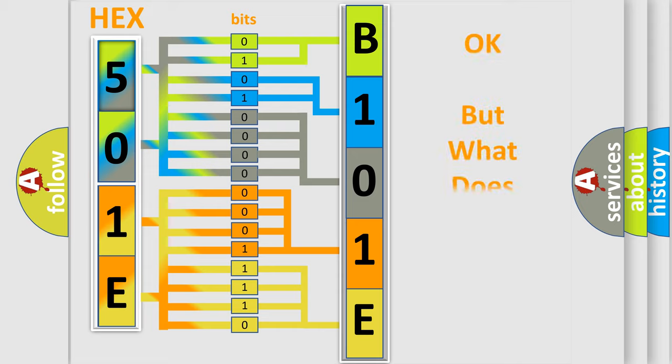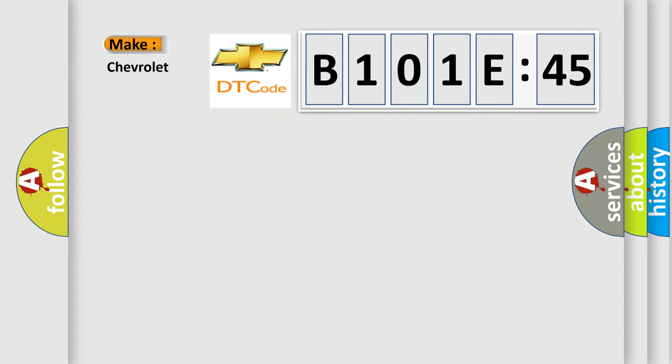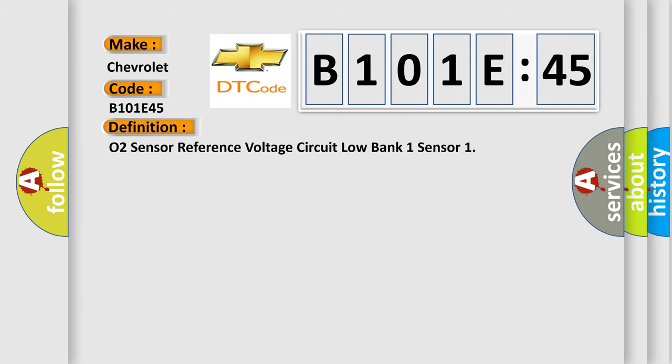The number itself does not make sense to us if we cannot assign information about what it actually expresses. So, what does the diagnostic trouble code B101E45 interpret specifically for Chevrolet car manufacturers? The basic definition is O2 sensor reference voltage circuit low bank one sensor. And now this is a short description of this DTC code.